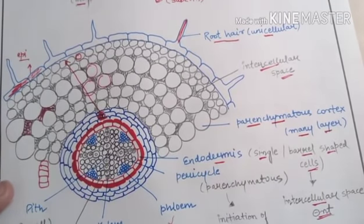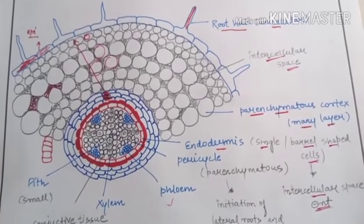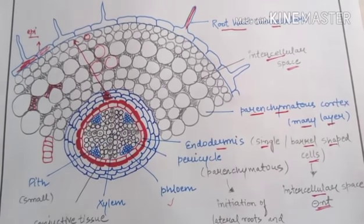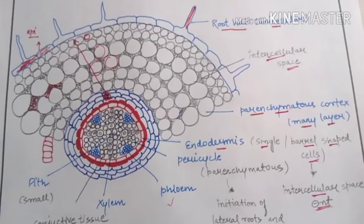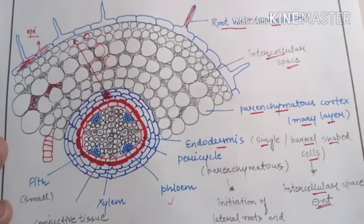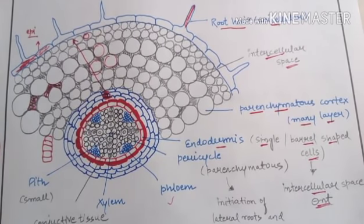Intercellular spaces are absent in endodermis because we do not want water to pass through. If there were intercellular spaces, water would pass through them. Since we do not want water to cross this membrane freely, there is no intercellular space in endodermis. Additionally, there is an extra layer — the Casparian strip — formed of suberin, which is water-repellent and ultimately prevents water from entering unregulated.